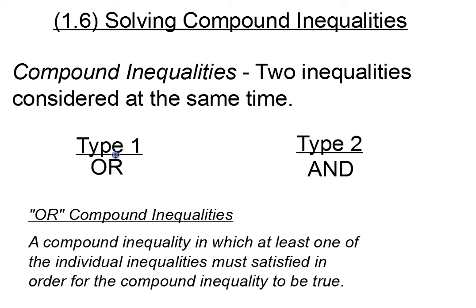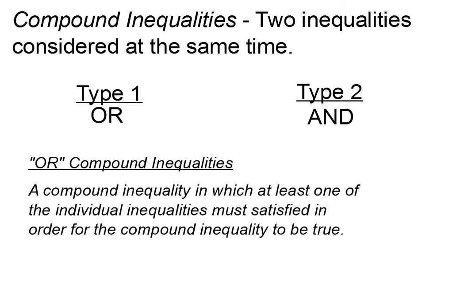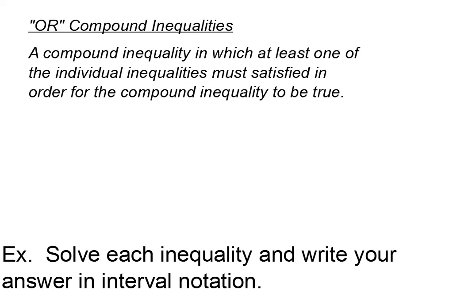Let's first focus on the or compound inequality. The or compound inequality is simply a compound inequality in which at least one of the individual inequalities is satisfied in order for the compound inequality to be true.